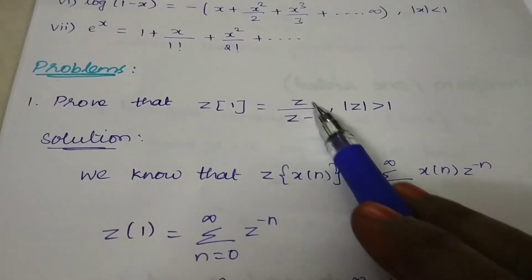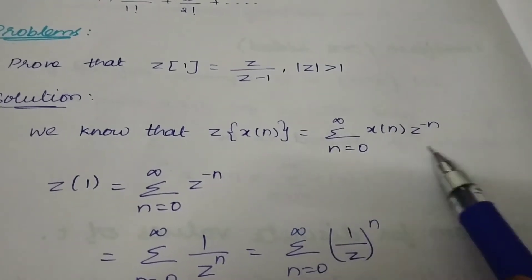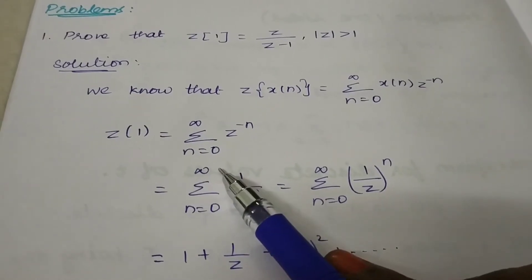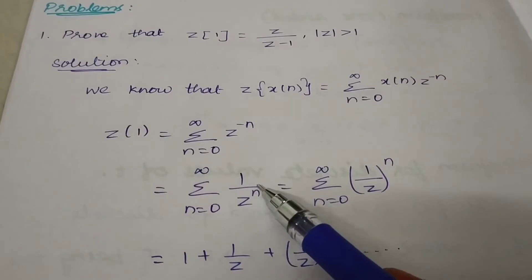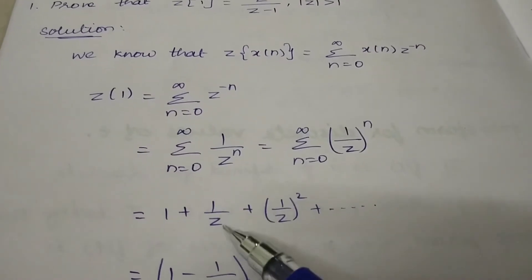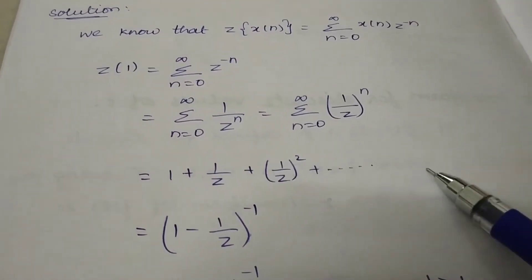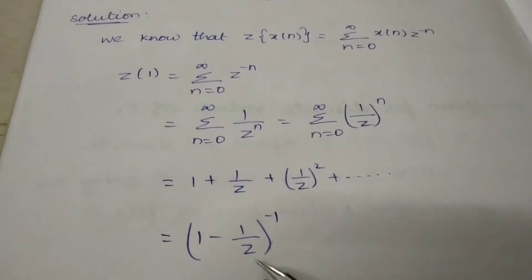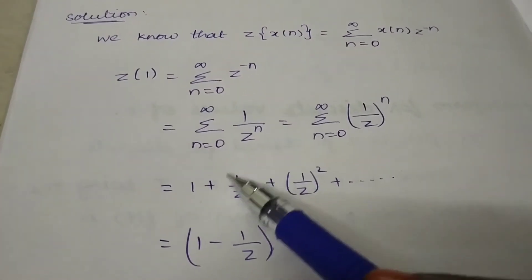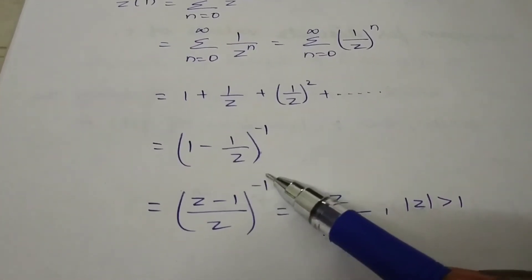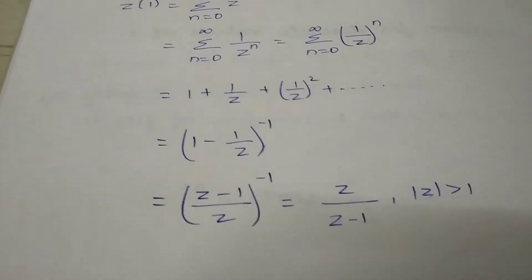Problem: Prove that Z{1} = z/(z-1). First apply the Z-transform formula with x(n) = 1. Substitute into the summation from n=0 to infinity. When n=0, anything to the power 0 is 1, giving first term 1. Then n=1 gives 1/z, then 1/z squared plus etc. This is in the format 1 + x + x² + etc., so using the formula (1-x)^(-1) with x = 1/z, simplify using LCM, and the result is z/(z-1). This is proved.